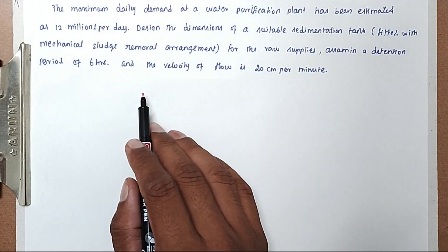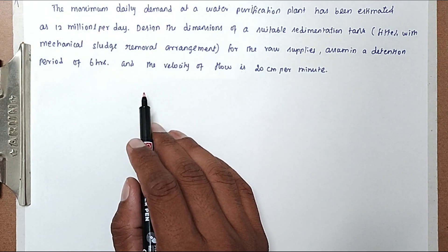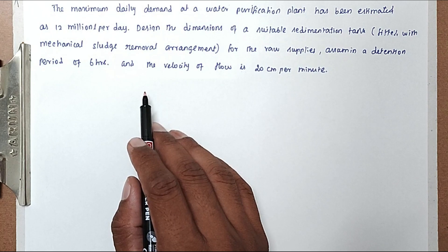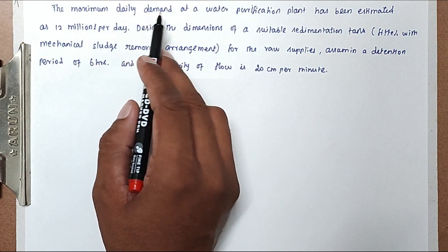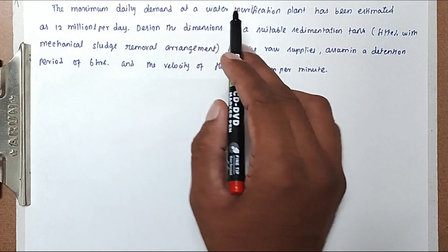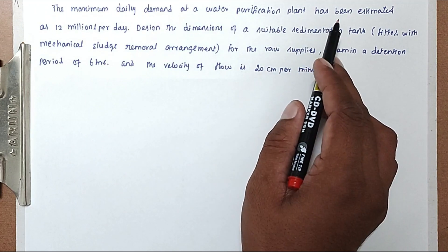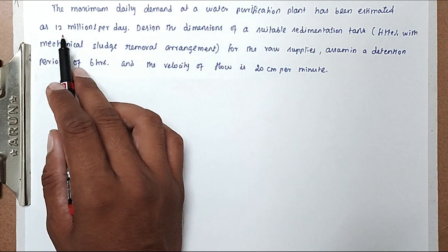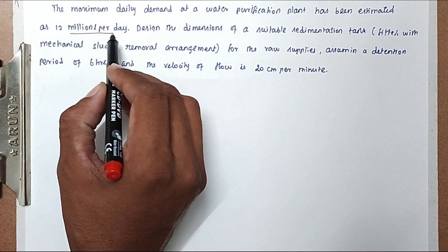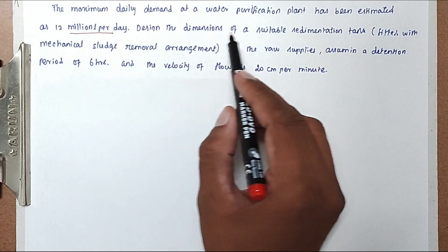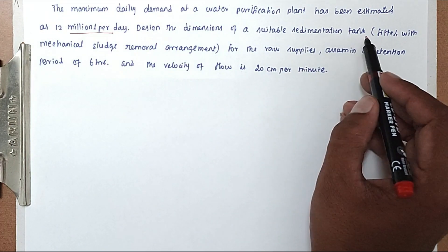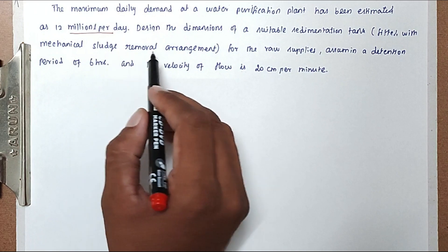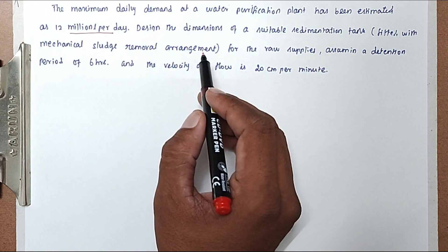Hello friends, welcome to student engineering exam. Today we are going to see the problem related with wastewater engineering in the topic of sedimentation tank. The question is: the maximum daily demand at the water purification plant has been estimated as 12 million liters per day. Design the dimension of a suitable sedimentation tank fitted with a mechanically sludge removal arrangement.